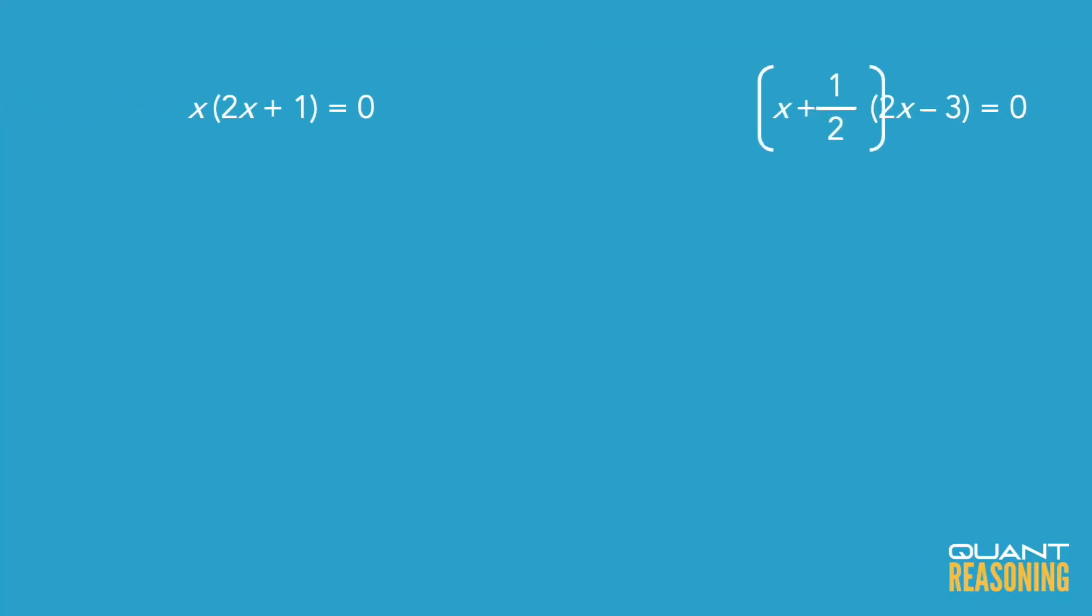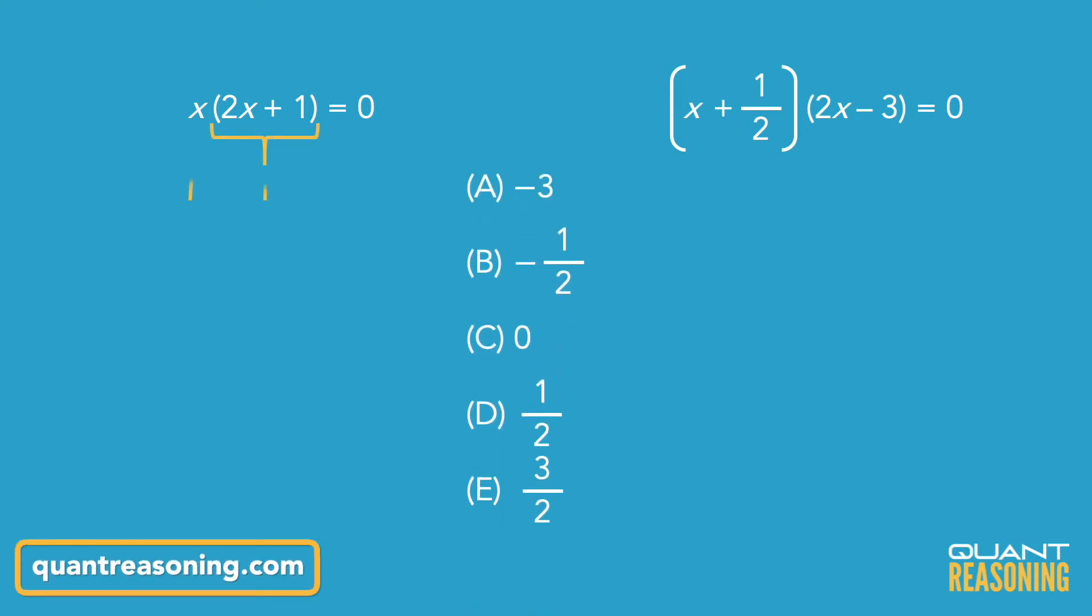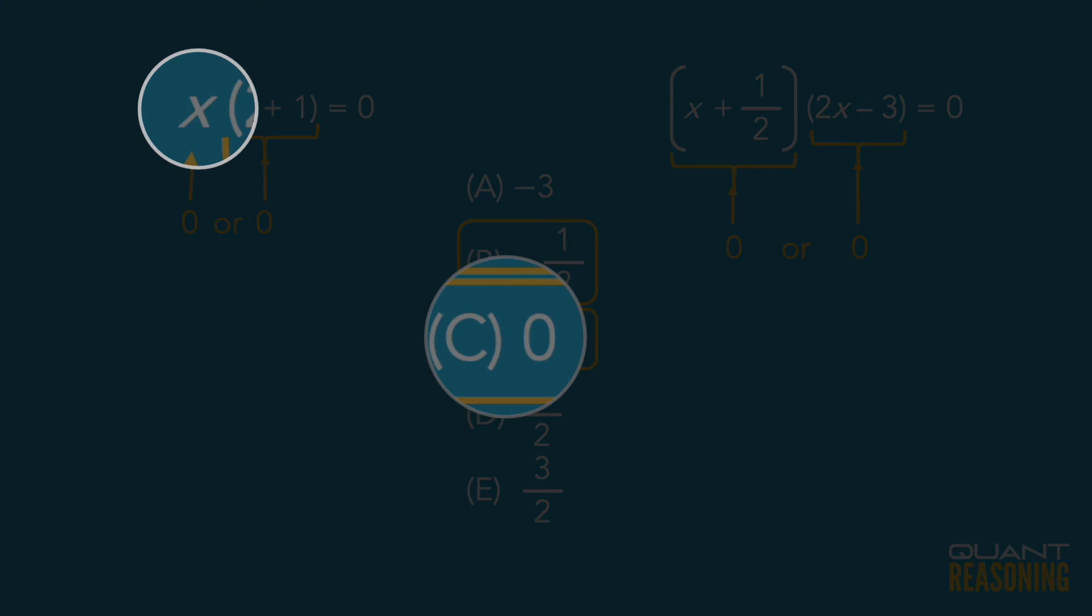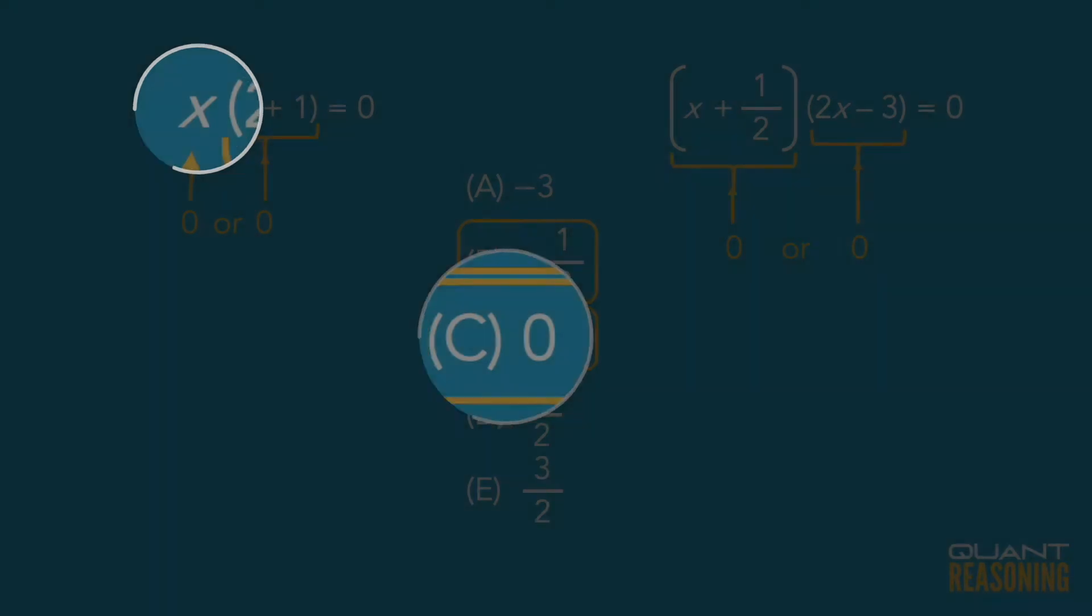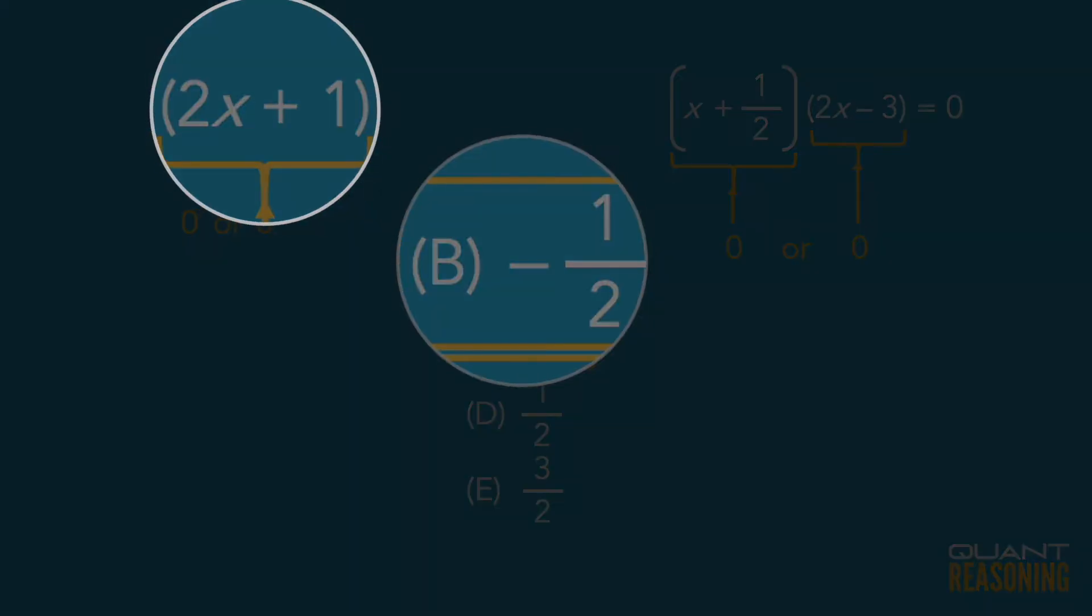So as I look at the first equation in this question and glance at the answer choices, I can already tell the answer has to be either B or C. Because those are the two values of x that would zero out one of the factors in that first equation.